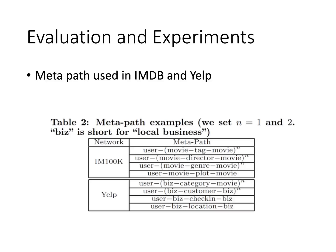For evaluation and experiments, they defined several metapaths — such as user-movie-tech-movie — and worked on four different metapaths for the IMDB dataset and different metapaths for the Yelp dataset.